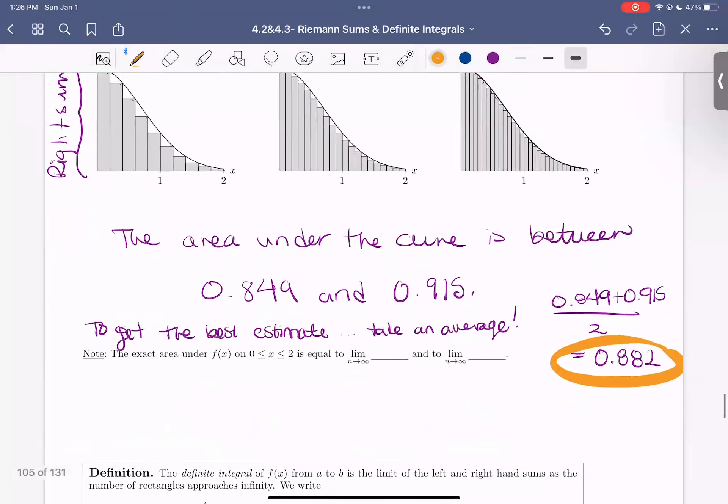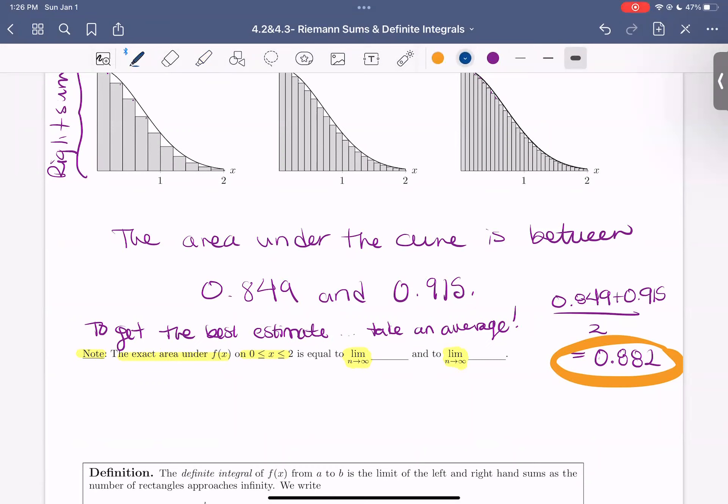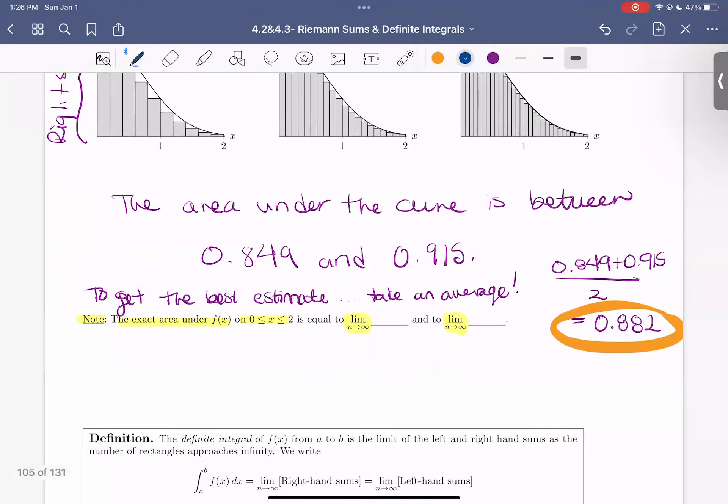And so one comment I want to make here on this final note. So this note says the exact area under f of x from 0 to 2 is equal to the limit as n goes to infinity. What we were just computing up here were right and left-hand sums. So if we took the number of rectangles to go to infinity to get smaller and smaller widths or get more and more rectangles, we're going to actually compute that area under the curve.